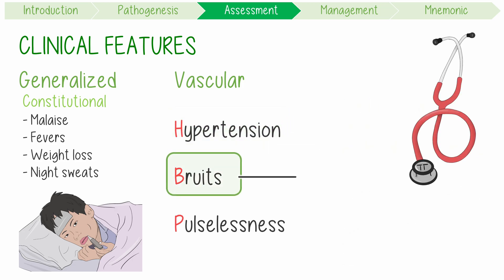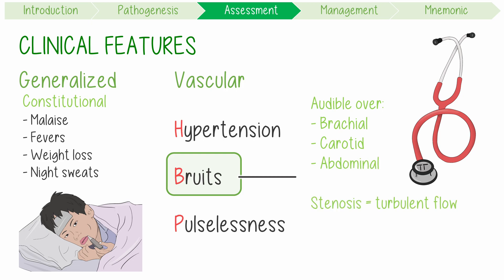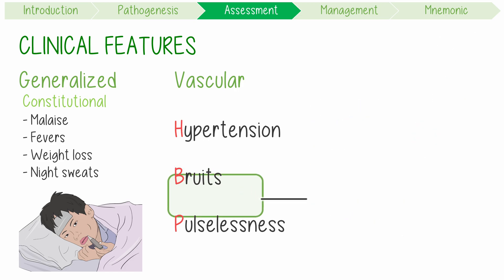Bruits are usually audible over the brachial, carotid, and abdominal vessels. Stenosis causes high-velocity turbulent blood flow, which creates vibrations in the arteries that can be heard in the form of a low-pitched whooshing sound — also known as a bruit.